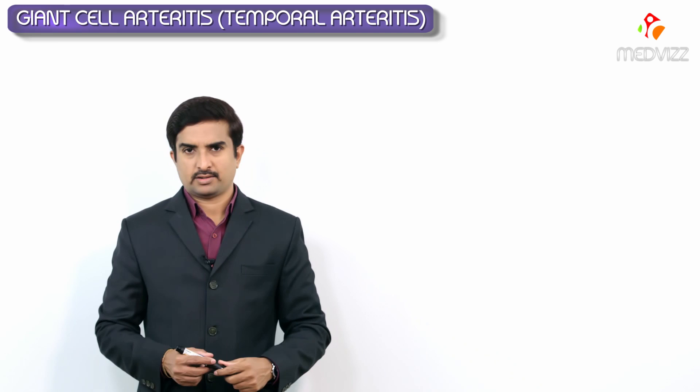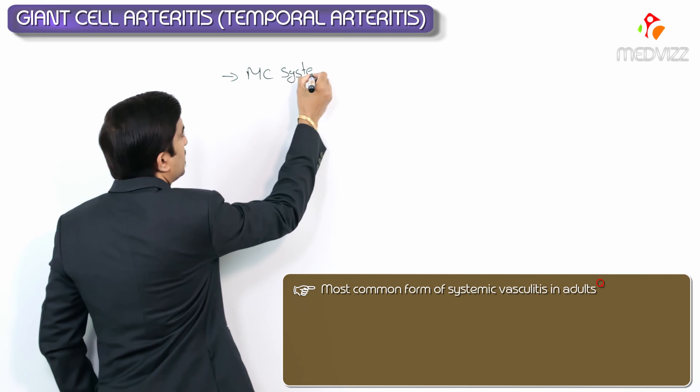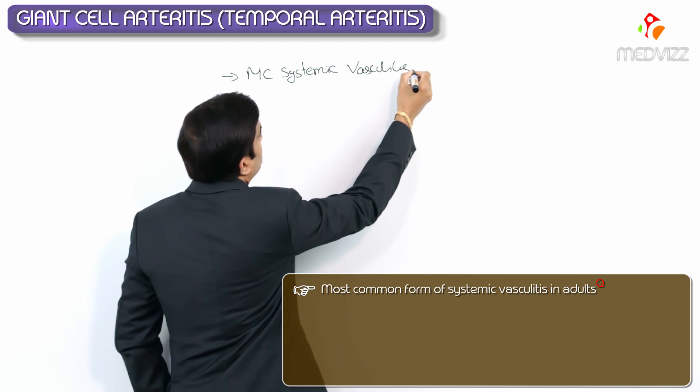Giant Cell Arteritis, also called Temporal Arteritis, is the most common form of systemic vasculitis in adults. For comparison, IgA vasculitis is the most common systemic vasculitis in children. Remember this as an MCQ point: Giant Cell Arteritis is the most common systemic vasculitis in adults.